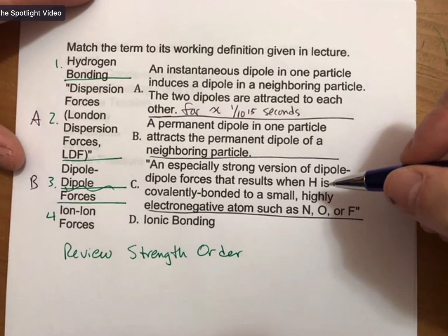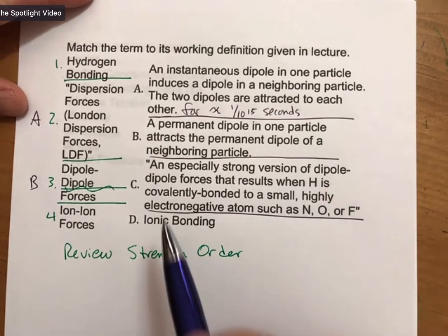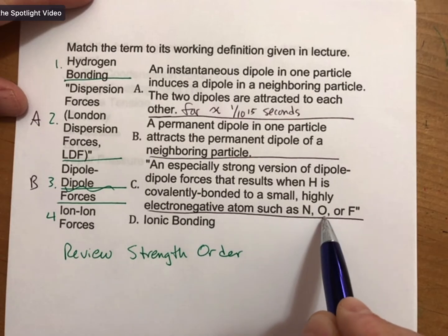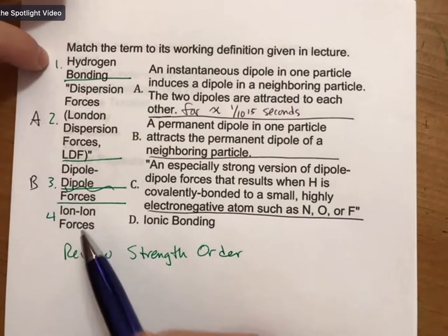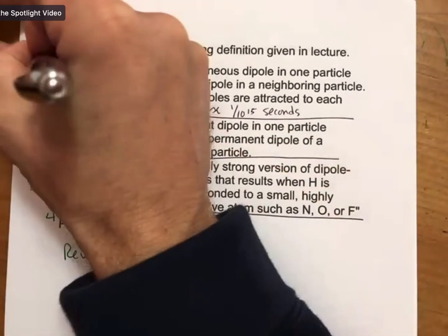C, somebody else, an especially strong version of dipole-dipole forces that results when hydrogen is covalently bonded to a small, highly electronegative atom such as nitrogen, oxygen, or fluorine. You only have two choices left, one or four. Somebody else please? Number one. Thank you, hydrogen bonding. Thank you Irvin.